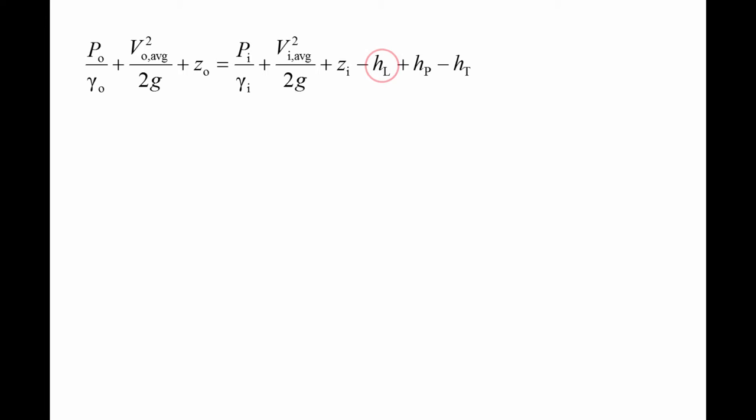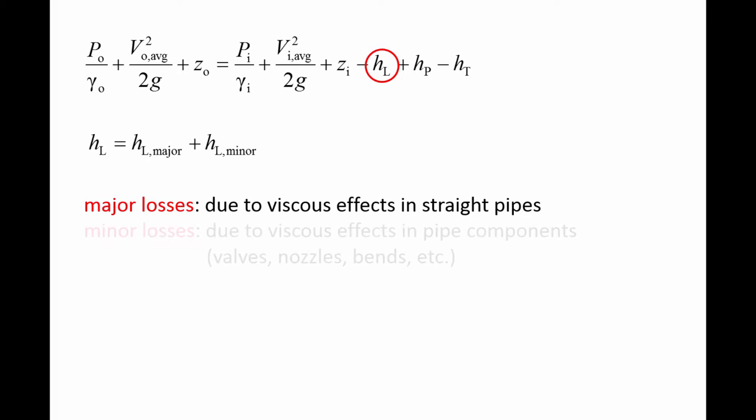Let's take a closer look at the head loss term HL. For convenience, the head loss is broken into two parts: the major losses, denoted by HL major, and the minor losses, denoted by HL minor. The major losses are related to viscous effects in straight pipes only. The minor losses are related to viscous effects in pipe components, such as valves, nozzles, bends, and so on.